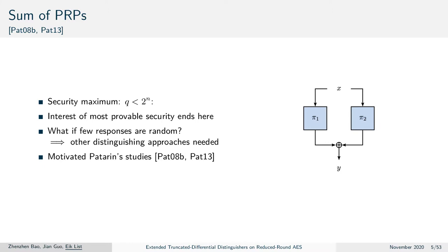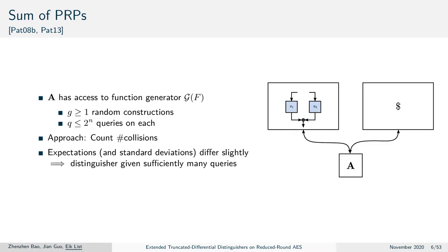A noteworthy work by Patarin went beyond this point. He asked himself what happens if your responses are random. In that case the simple sum distinguisher no longer works and other distinguishing approaches are needed, which motivated his study. He went on to find other attacks to exceed this limit of 2^n queries.